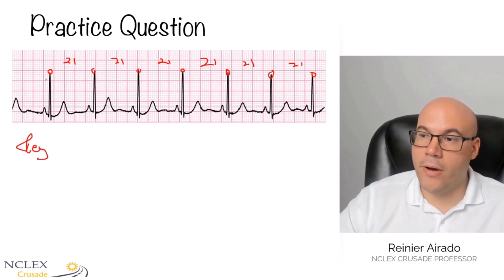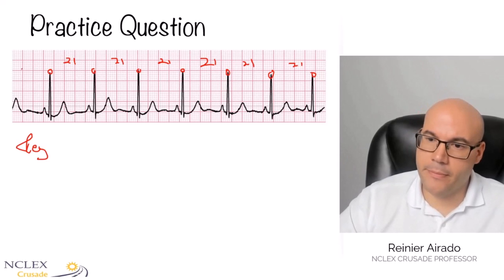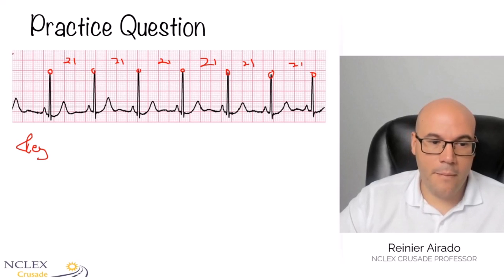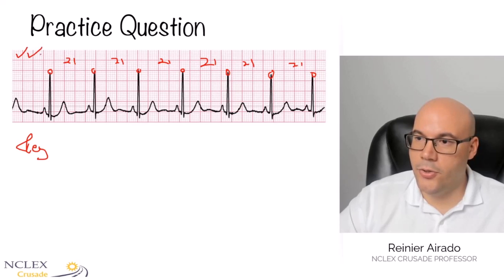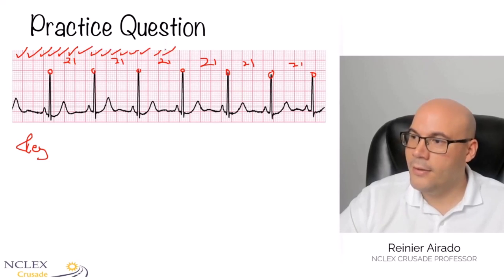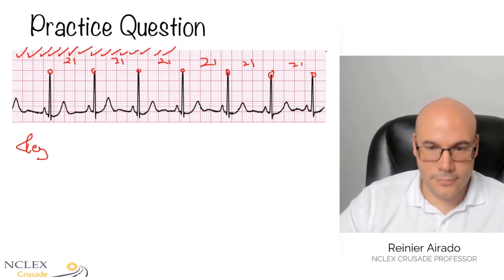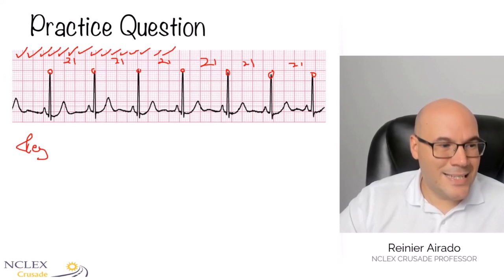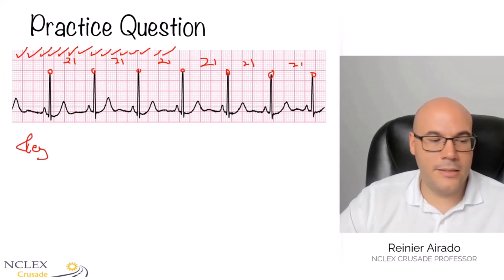Now let's find the heart rate. Do we have a six-second strip? To confirm, we need 30 big boxes. Counting across the strip, we get 30 big boxes. So this is a six-second strip.